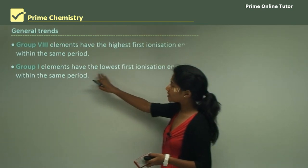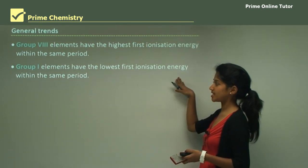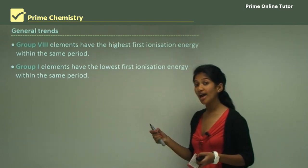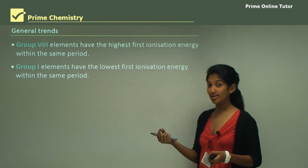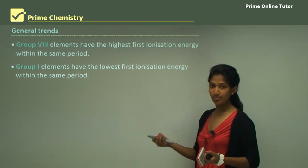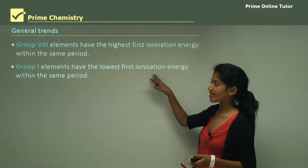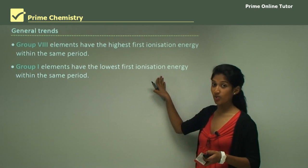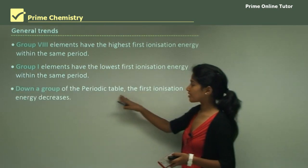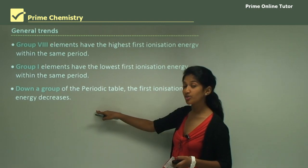Group 1 elements have the lowest first ionization energy within the same period. Because they only have one electron in their outer shell, it is quite loosely bonded and is easily given away, which is why their ionization energy is quite low.